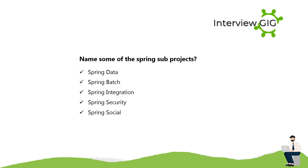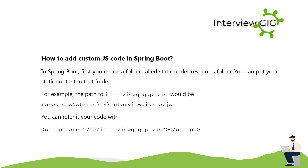Name some of the Spring sub-projects: Spring Data, Spring Batch, Spring Integration, Spring Security, and Spring Social. How to add custom JS code in Spring Boot? First, create a folder called 'static' under the resources folder. You can put your static content in that folder. For example, the path to interviewgig-app.js would be resources/static/js/interviewgig-app.js.